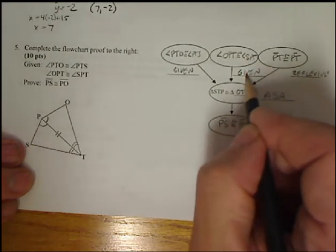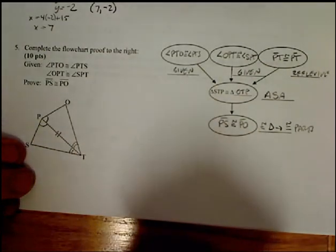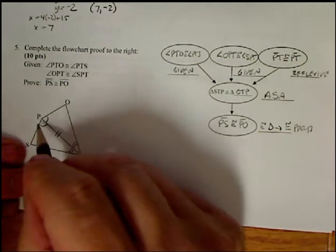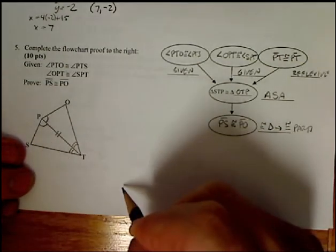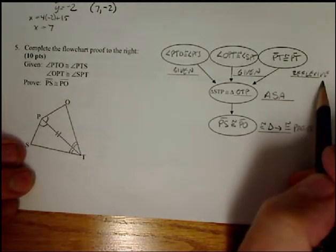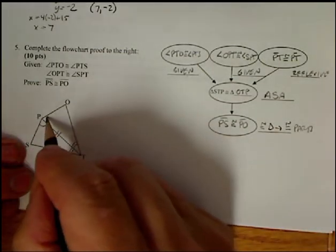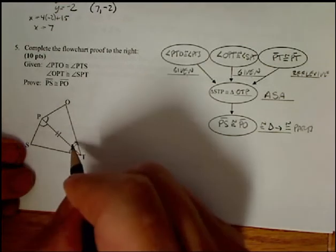We have one more piece of information we need to use. And the two things you want to watch for are vertical angles and reflexive. PT equals itself. So I have PT congruent to PT. That's called reflexive. Now once I have this done, I have an angle, side, angle. Matching this angle, side, angle.